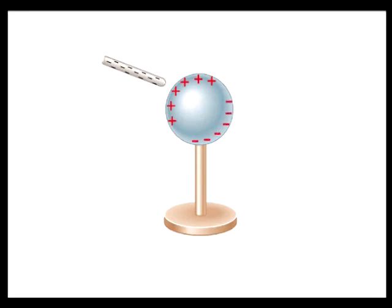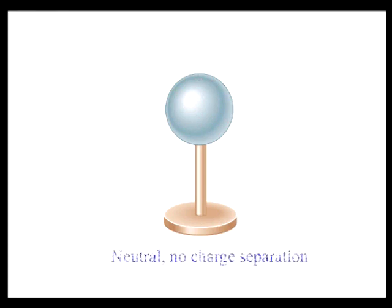As a result, the part of the sphere nearest the rod becomes positively charged, and the part farthest away becomes negatively charged. These positively and negatively charged regions have been induced to form because of the repulsive force between the negative rod and the free electrons in the sphere. When the rod is removed, the free electrons return to their original places and the charged regions disappear.